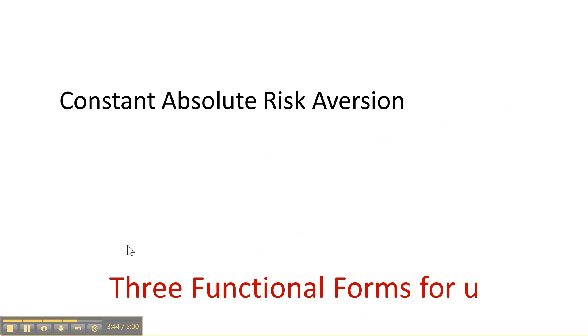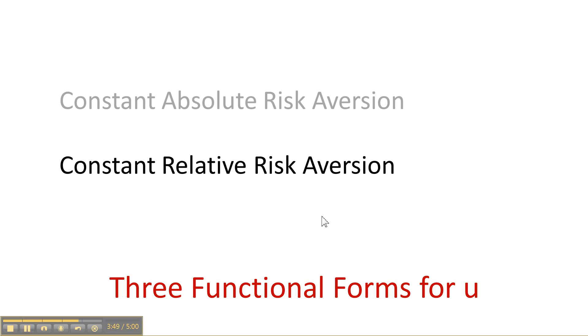Now we want to look at three functional forms for u. Constant absolute risk aversion, constant relative risk aversion, and quadratic utility.